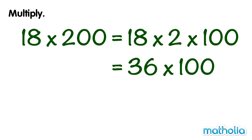36 times 100 equals 36 hundreds, which is equal to 3600. So 18 times 200 equals 3600.